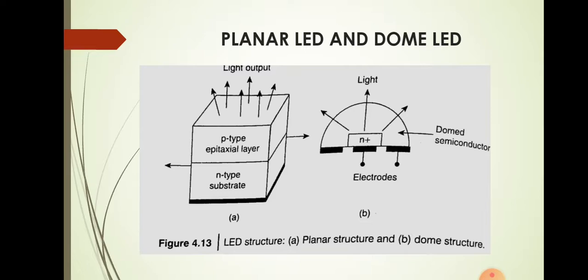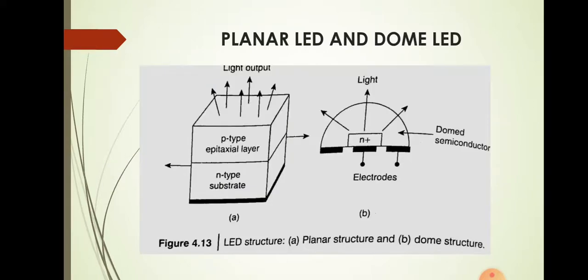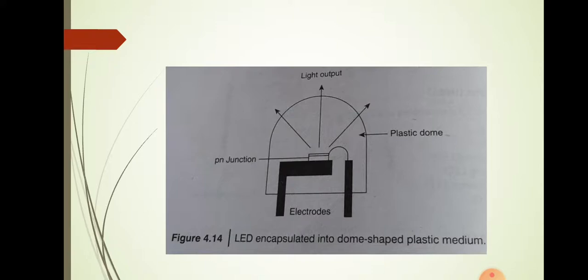In order to reduce total internal reflection, the dome or hemisphere structure is preferred so that light rays are incident on the surface at an angle less than the critical angle. In the case of a planar LED, light rays produced after recombination that have an angle of incidence greater than the critical angle will be reflected back to the p-n junction. The dome structure reduces the chances of reabsorption. Since making a dome-shaped junction is practically expensive, it is encapsulated in a dome-shaped plastic medium having a higher refractive index than air.